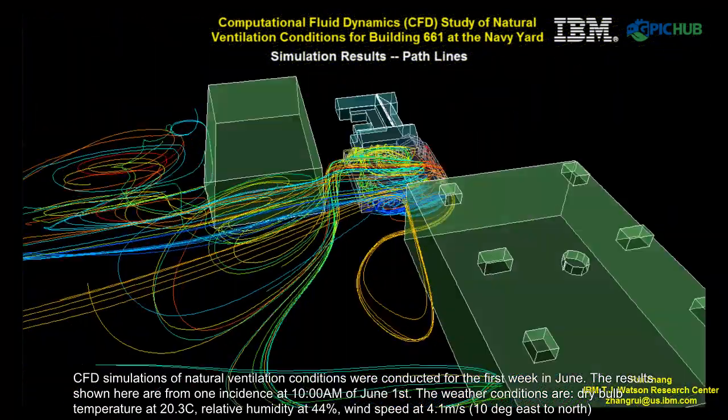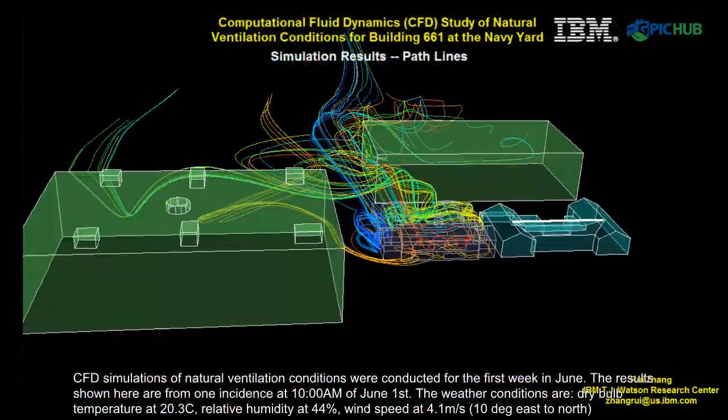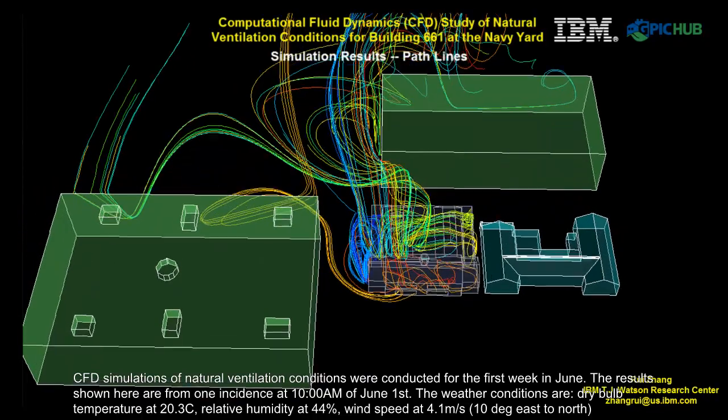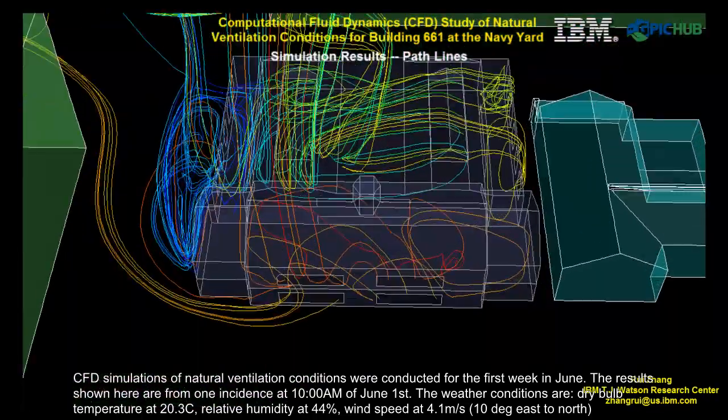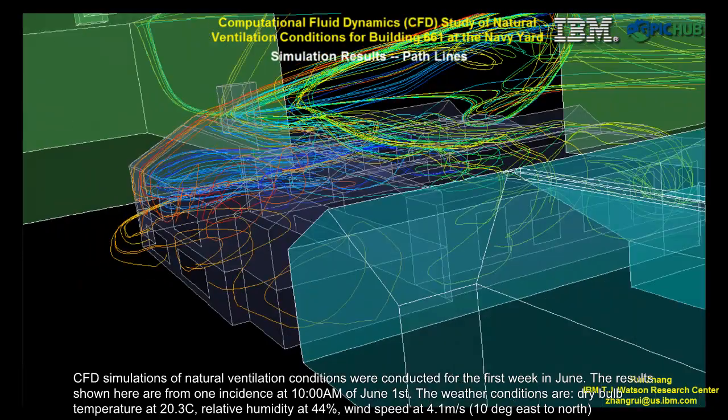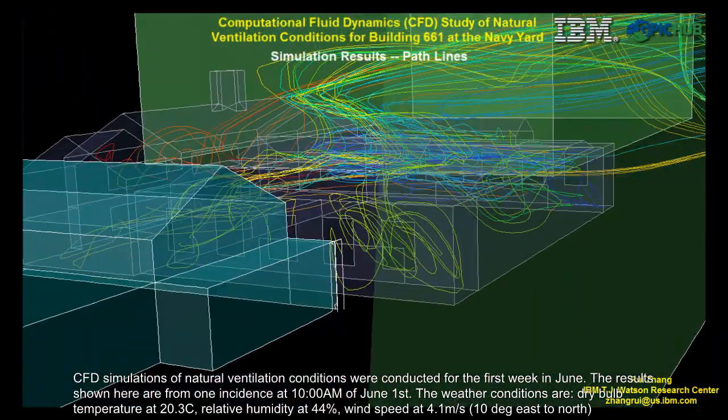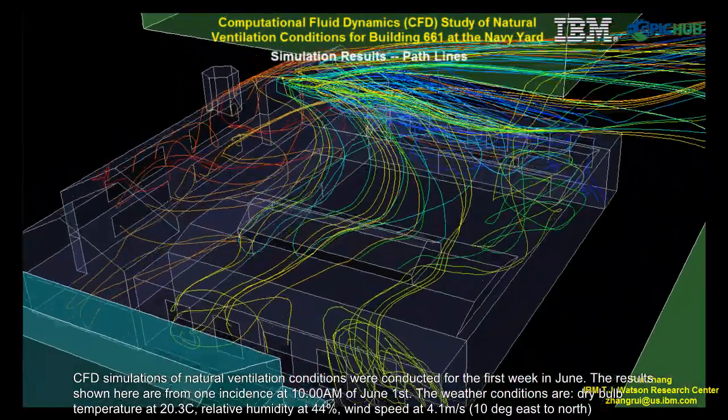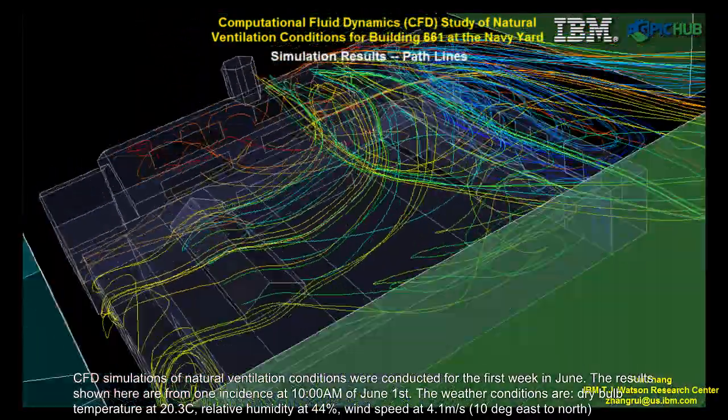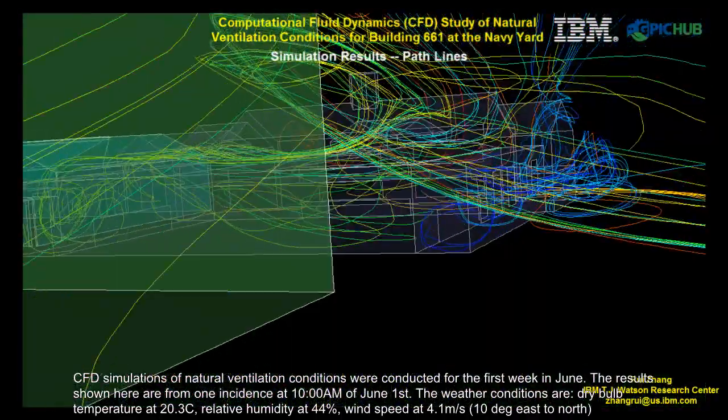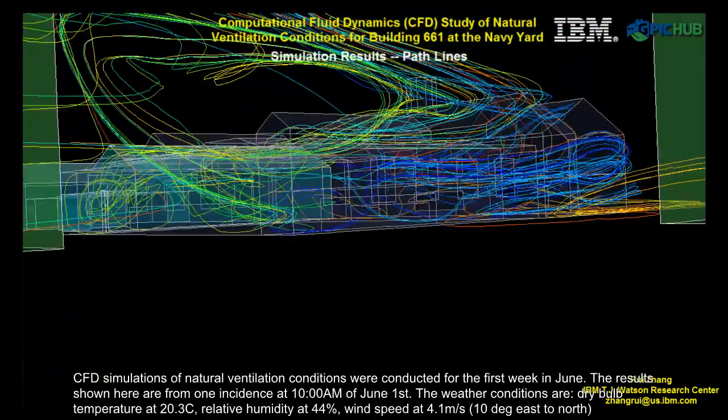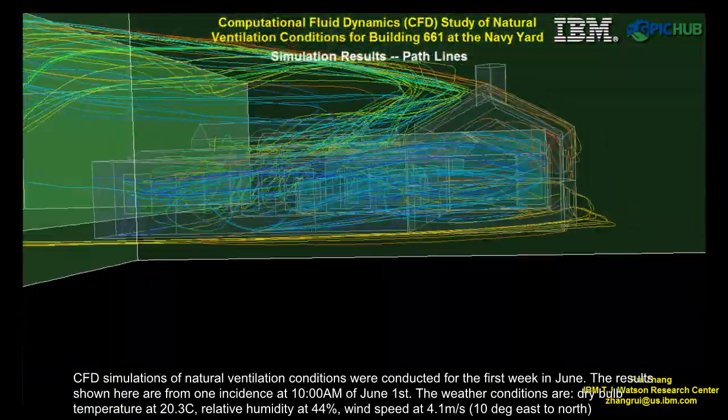The particle path visualization is showing how the air flows through inside Building 661 and exits to the outdoor environment. The particle path visualization is more intuitive and it helps architects to examine the flow pattern more effectively and helps with the design of better ventilated buildings.